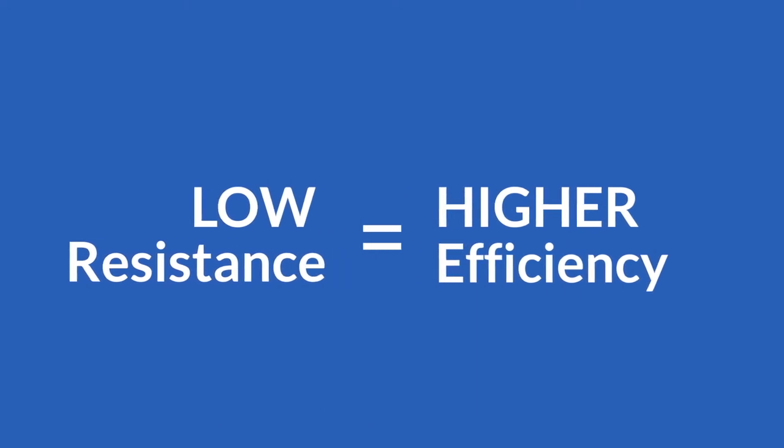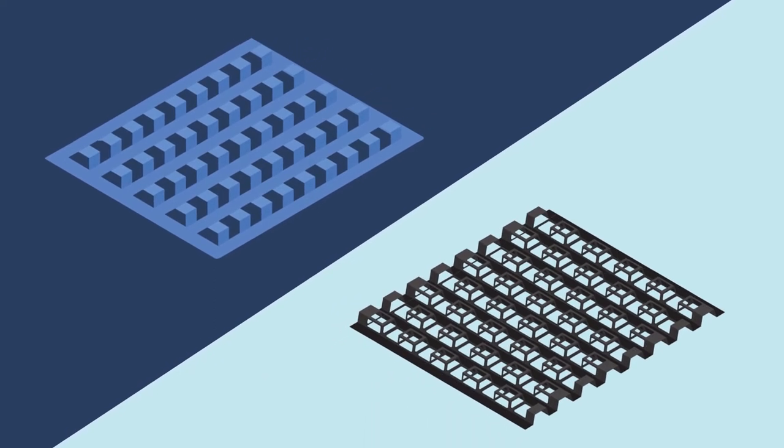In layman's terms low resistance equals higher efficiency. The more open the spacer the more the air can extract heat from the first box stack to the furthest.